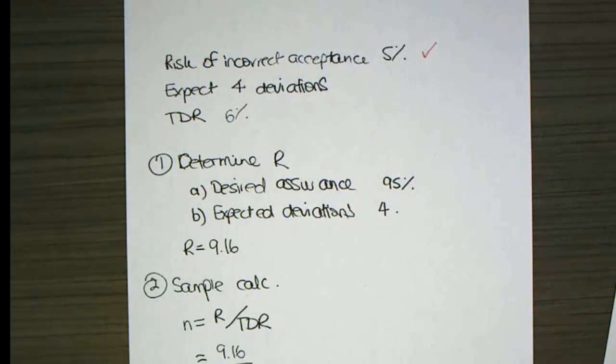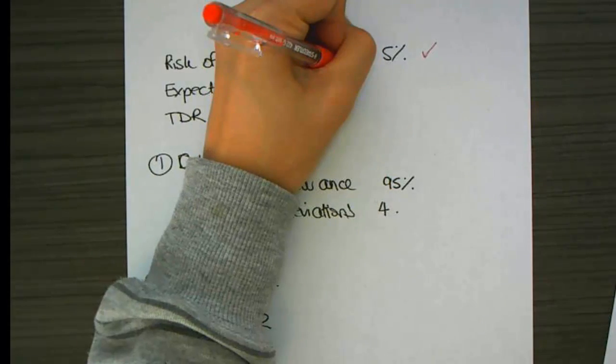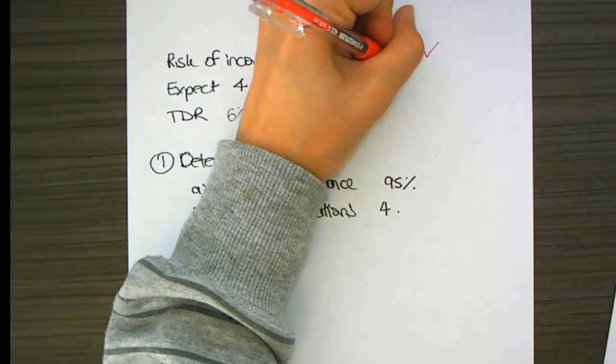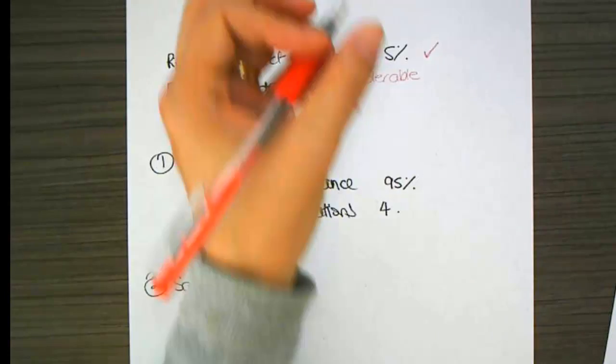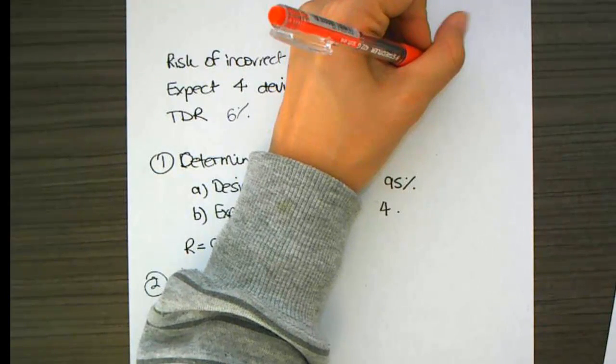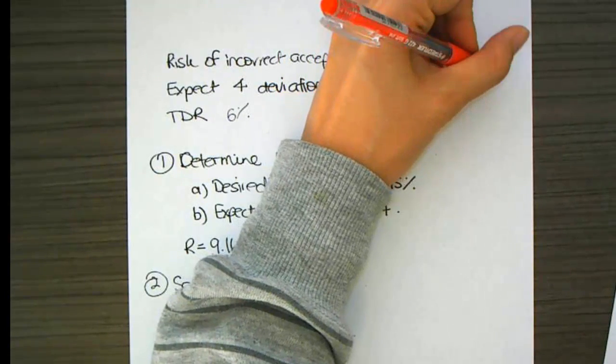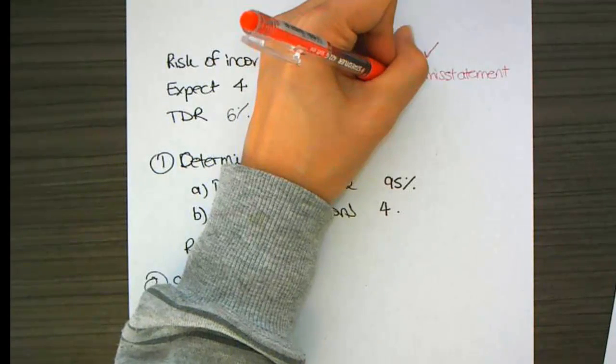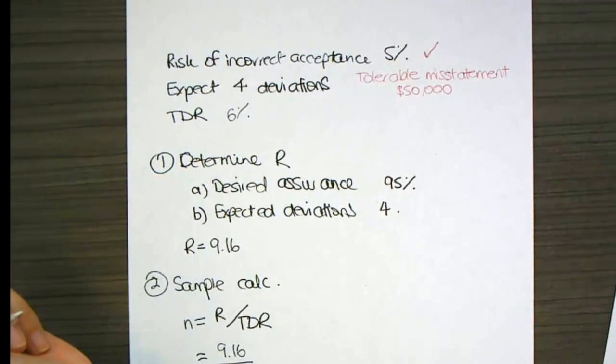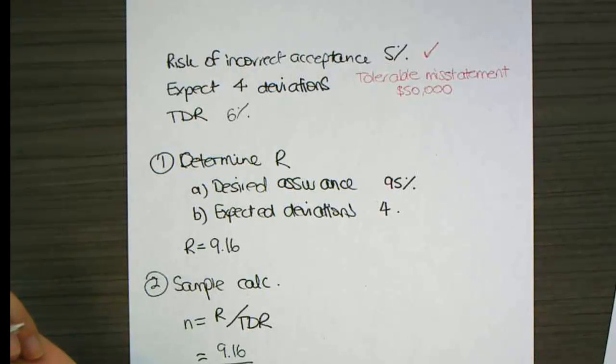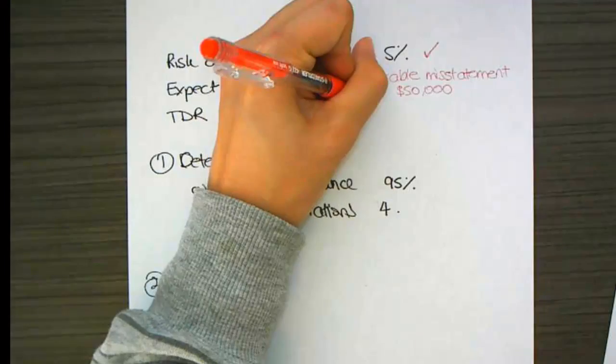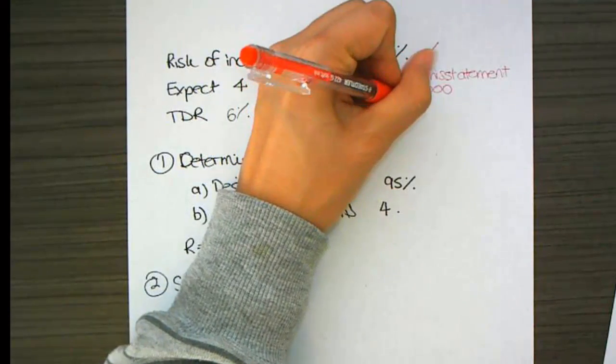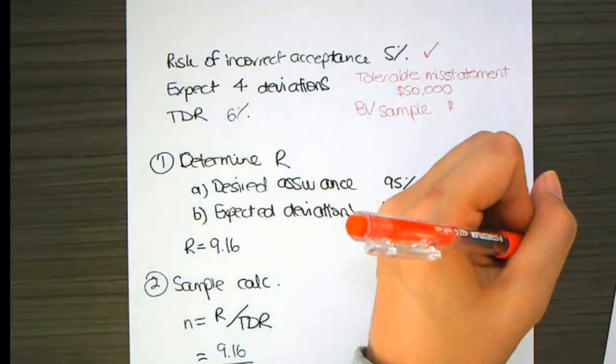Instead, I'm using 2 extra pieces of information. I'm being told that the tolerable misstatement is $50,000. So I'm willing to allow $50,000 worth of error within that particular account, and that the book value of my sample is $1 million.